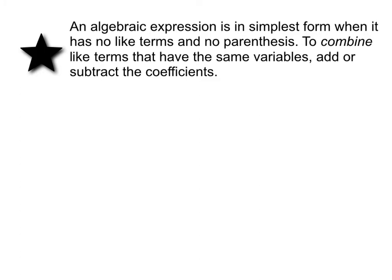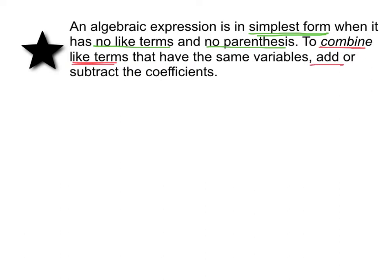An algebraic expression is in simplest form when it has no like terms and no parentheses. When you combine like terms, you're going to add or subtract the coefficients. A coefficient is the number that precedes the variable — the number in front of the variable.